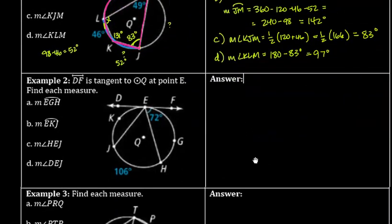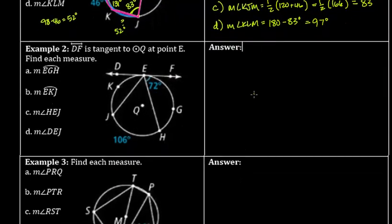Let's move on to Example 2. Another complicated picture where we have to find some missing arcs and angles. We're told that line DF is a tangent at point E, giving us an inscribed angle. We also have a couple of angles formed by a chord and a tangent: angle DEJ and angle FEH, both formed by the tangent and a chord.